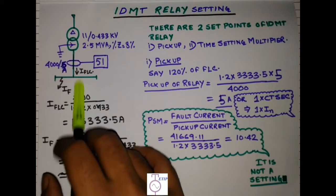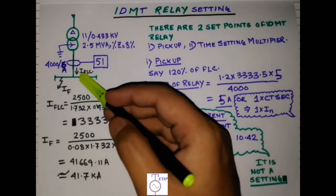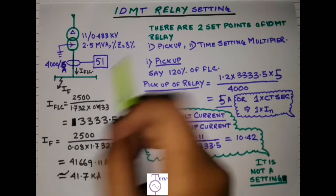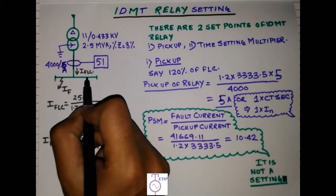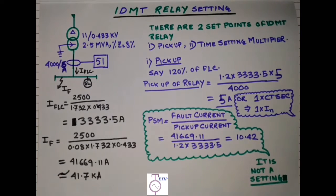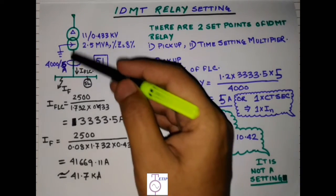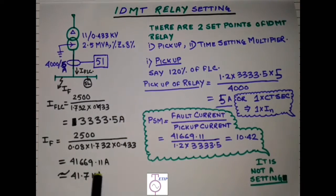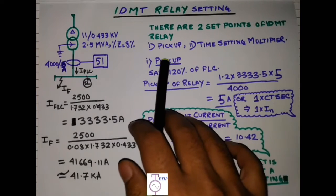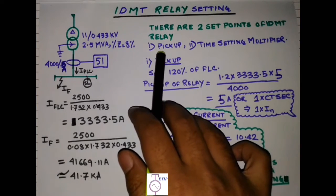But in case there is any motor feeder getting fed from this switchboard, this motor will also contribute during the fault, so this will balance the system. However we have considered that all the loads connected here are static loads and do not contribute to the short circuit current. So the short circuit is only due to the transformer, so maximum possible short circuit current is 41.7 kilo ampere.